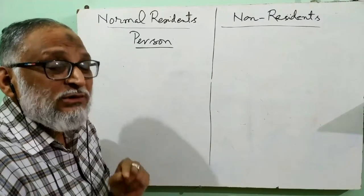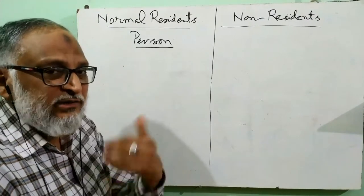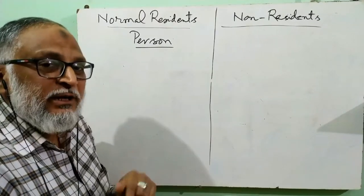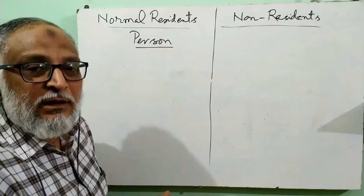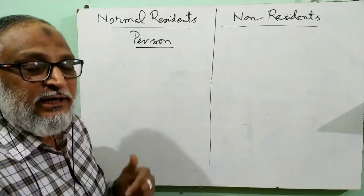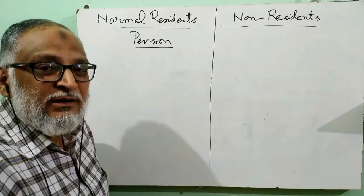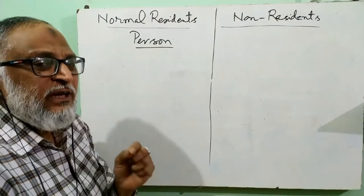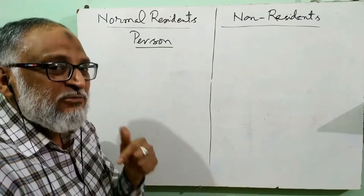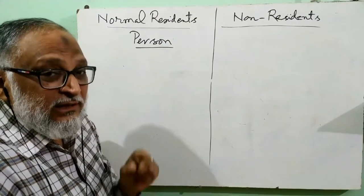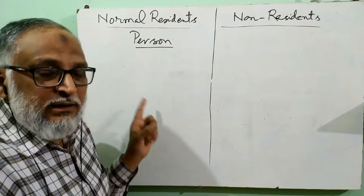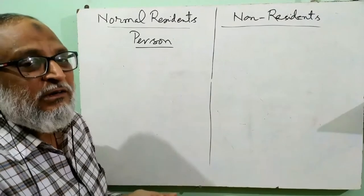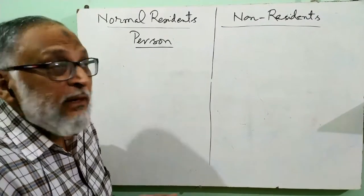Third, it can happen that people born in another country — like Bangladesh and Nepal — came to India. Now they earn here, save here, and spend here. The condition is: if a person stays more than one year, we have to see whether his economic interest lies in India. If yes, then he becomes a normal resident for us. But if within a year he goes back and his economic interest was not in India, then he is a non-resident for us.